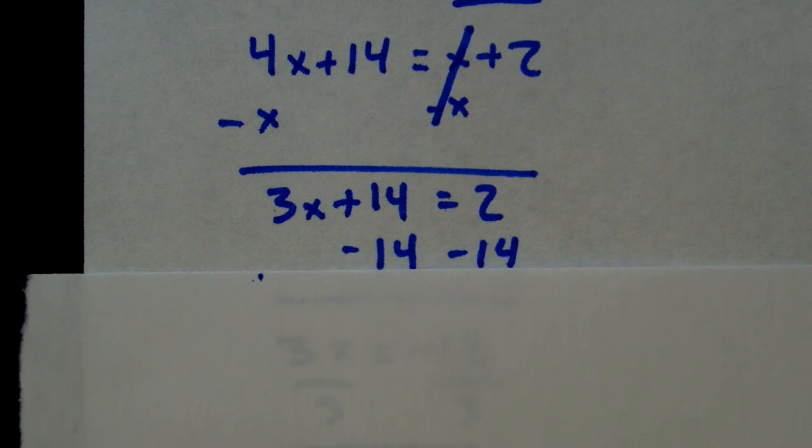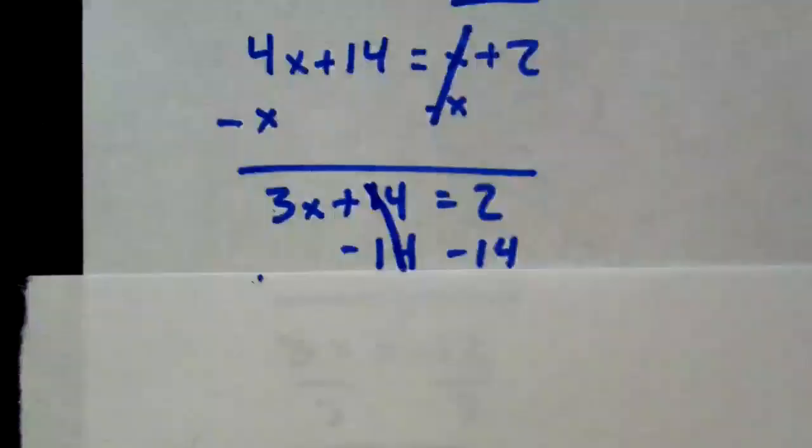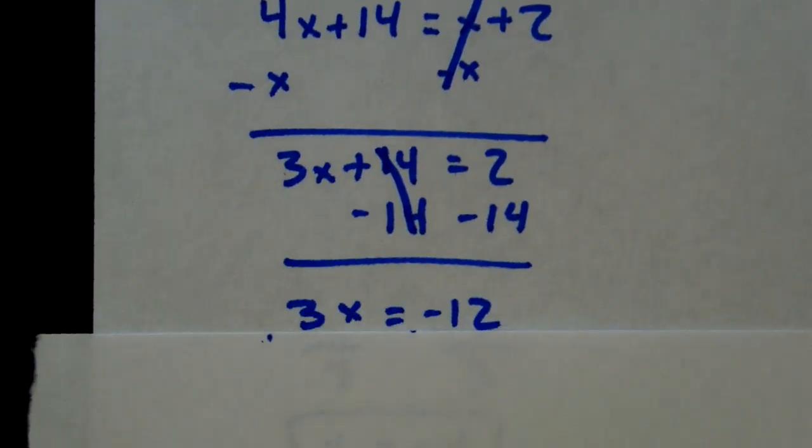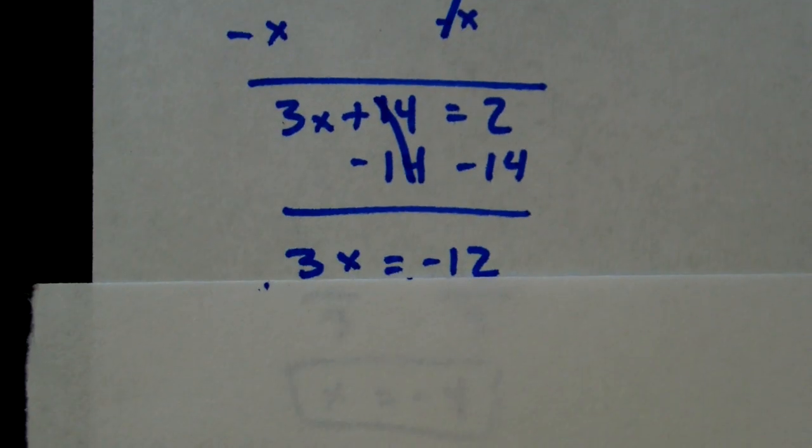Now, we've got to move the 14, so we subtract 14. 14 minus 14 cancels. We get 3x equals negative 12.